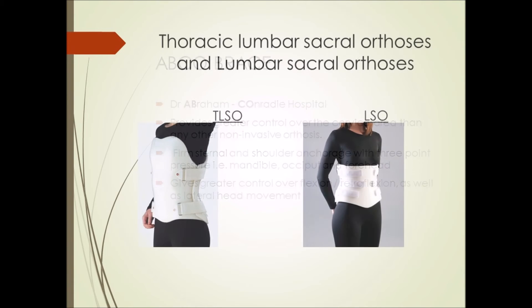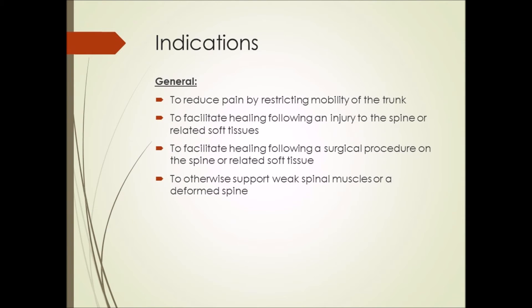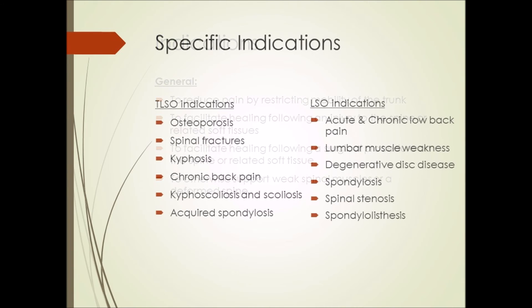The thoracic lumbar sacral orthosis (TLSO) and lumbar sacral orthosis (LSO) are two-piece plastic braces supporting the spine. The TLSO supports from the thoracic vertebrae of the chest to the base of the spine at the sacrum, while the LSO supports from the lumbar region of the spine to the sacrum. General indications for these braces are to reduce pain by restricting mobility of the trunk, facilitating healing following an injury or surgical procedure to the spine or related soft tissue, and to support weak spinal muscles or a deformed spine.